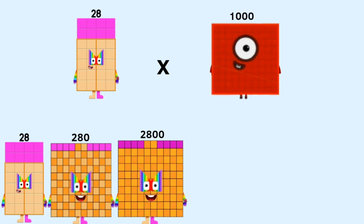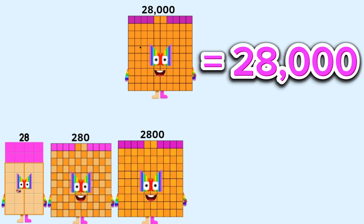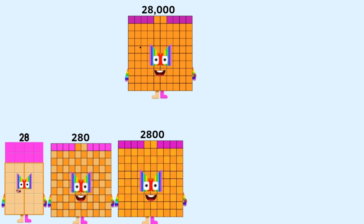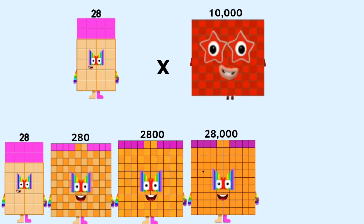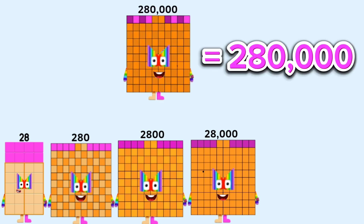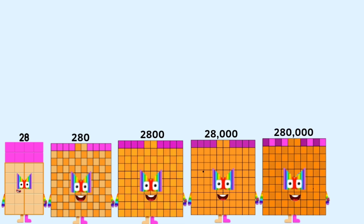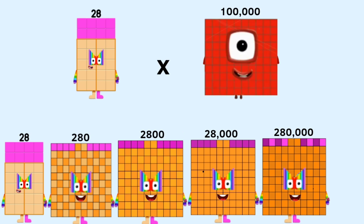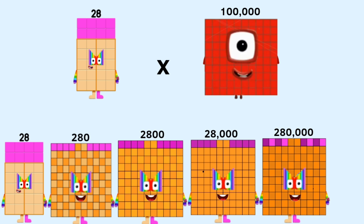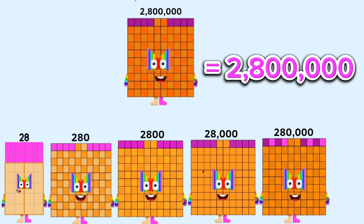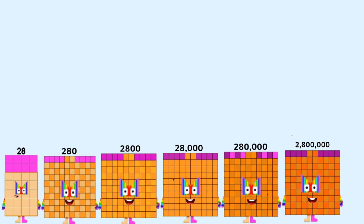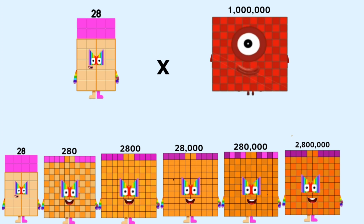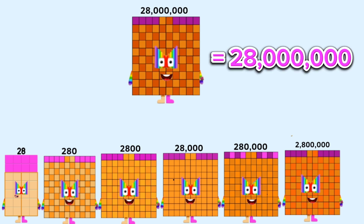28 times 1,000 equals 28,000. 28 times 10,000 equals 280,000. 28 times 100,000 equals 2,800,000. 28 times 1,000,000 equals 28,000,000.